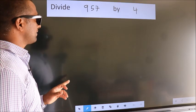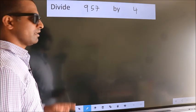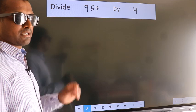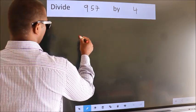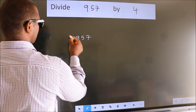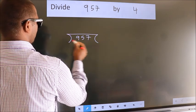Divide 957 by 4. To do this division, we should frame it in this way. 957 here, 4 here.